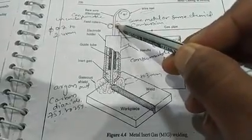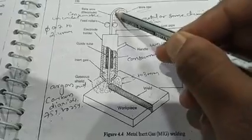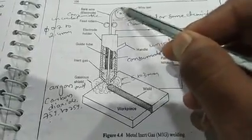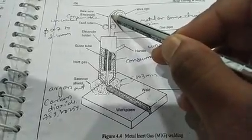A small thick wire is there, and over here the two feeder rollers are given. Feeder rollers means this is a huge roller or bundle in which the wire is rolled, and by these two rollers this wire is fed.